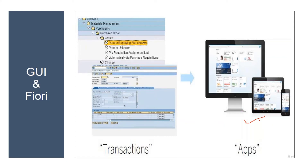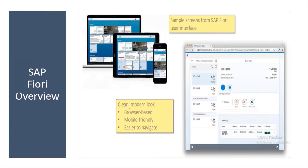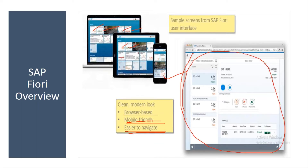Fiori is browser-based and mobile-friendly — it can be accessed from a smartphone — and it is very easy to navigate, not as complex as GUI. When you log into Fiori, you will get a screen like this. These are called apps or tiles — some people call them apps, some call them tiles. When you click on an app, a typical Fiori app looks like this.